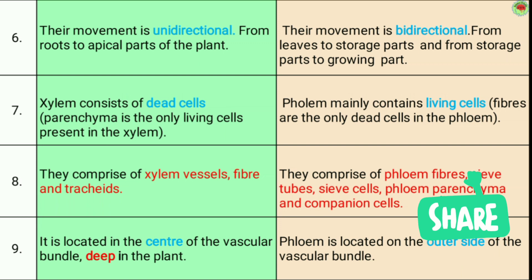Seventh, xylem consists of dead cells, except xylem parenchyma, which is the only living cell present in the xylem. Phloem mainly contains living cells, except fibers, which are the only dead cells in phloem. Eighth, xylem comprises xylem vessels, xylem fibers, and tracheids, while phloem comprises phloem fibers, sieve tubes, sieve cells, phloem parenchyma, and companion cells.